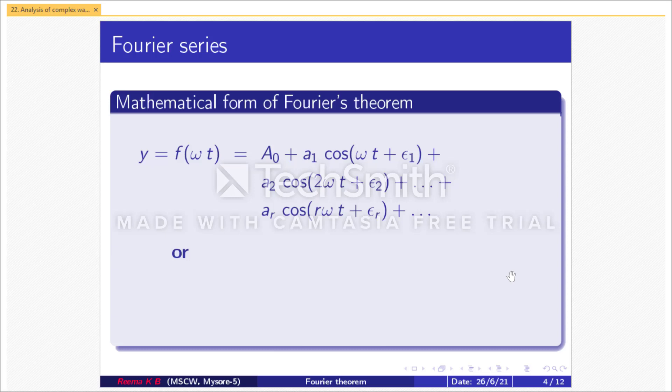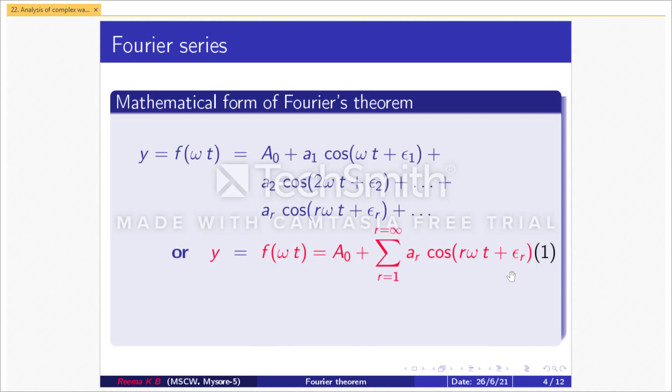Mathematical form of Fourier's theorem: Fourier's theorem can be expressed as follows. y = f(ωt) = a₀ + a₁cos(ωt + ε₁) + a₂cos(2ωt + ε₂) + ... + aᵣcos(rωt + εᵣ), or equivalently y = f(ωt) = a₀ + Σ(r=1 to ∞) aᵣcos(rωt + εᵣ). Let us consider this as equation 1.